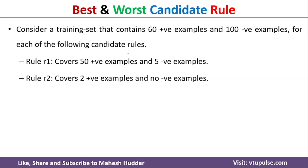In this case, we have been given a training set with 60 positive examples and 100 negative examples. Also, there were two rules given to us. The first rule covers 50 positive examples and 5 negative examples. The second rule covers 2 positive examples and no negative examples.